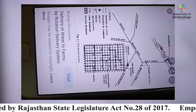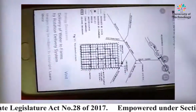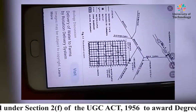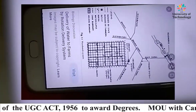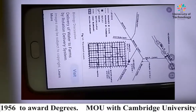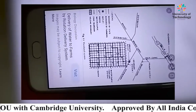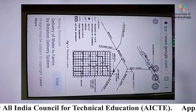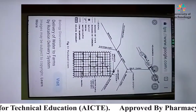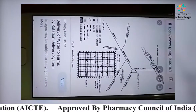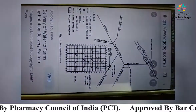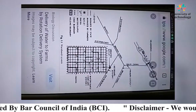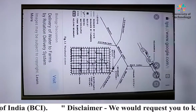The main advantage of the roster system is that wastage of water is considerably reduced because a large-size stream is used for a small period. We have studied two steps: volumetric assessment and the roster system. In the next lecture we will move towards further steps for improving irrigation efficiency. Thank you.